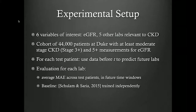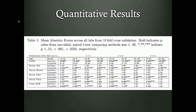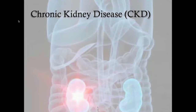For each patient, we use data before some particular time t in order to predict future lab values, then look at mean average error across different test patients in future time windows. What we see is that including correlation across labs really helps, and using this Gaussian process model really helps. This was, in a sense, a success story — but not totally, because this hasn't really been adopted fully by the hospital.